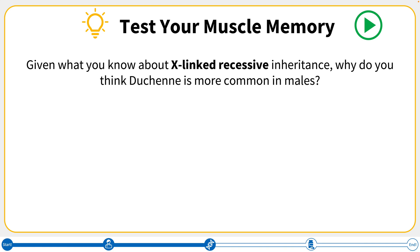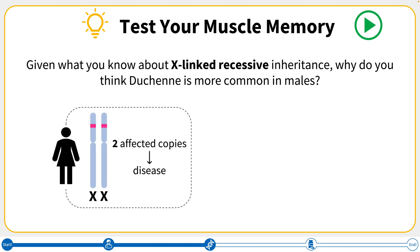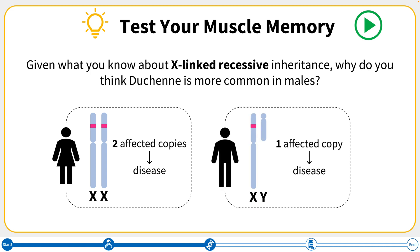To answer this question, we need to remember that female individuals have two X chromosomes, while males have only one. We know that Duchenne has an X-linked recessive pattern of inheritance, meaning that it is caused by changes to a gene on the X chromosome. Since females have two X chromosomes, they would need both copies of this gene to have a change in order to have Duchenne. Since males only have one X chromosome, they would only need one copy with the change to have the disease. You can think of this process almost like playing darts — it's much more difficult to hit two bullseyes than only one. Since males only need one bullseye, they have a higher chance of having the disease.